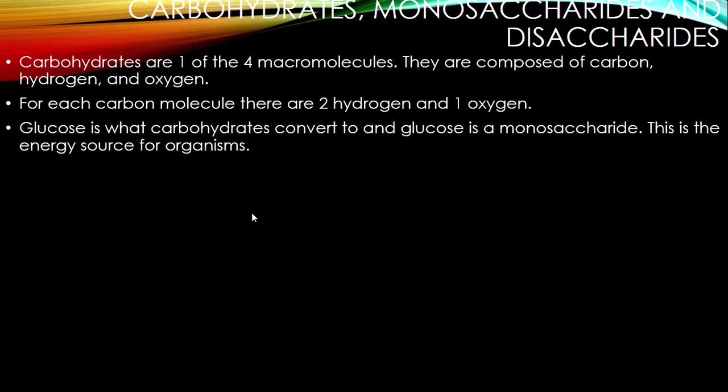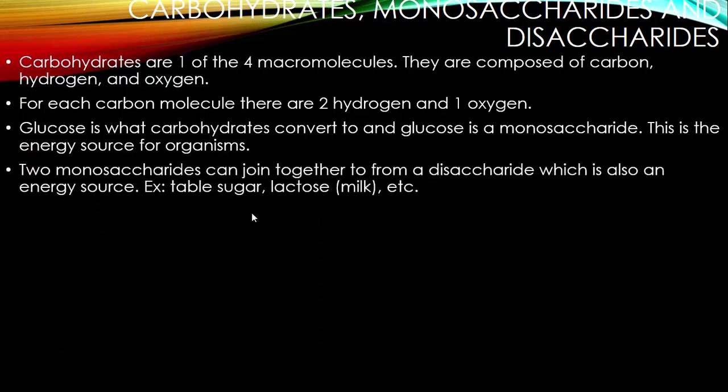Glucose is what carbohydrates convert to, and glucose is a monosaccharide — the energy source for organisms. Here we have that word mono again: mono meaning one, saccharide meaning sugar, so there's one sugar molecule. Two monosaccharides can join together to form a disaccharide, which is also an energy source like table sugar or lactose in milk. The DI means two, so we have two sugar molecules, which is why it's a disaccharide.